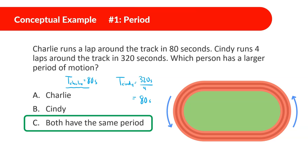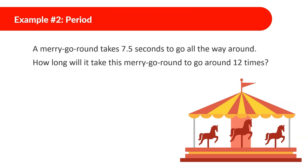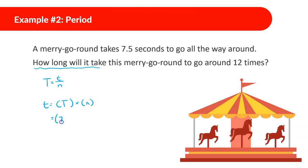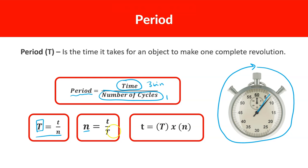Example: A merry-go-round takes 7.5 seconds to go all the way around. How long will it take to go around 12 times? This time we're looking for time, so we use: time equals period times number of cycles. The period is 7.5 seconds and the number of rotations is 12, so 12 times 7.5 equals 90 seconds.